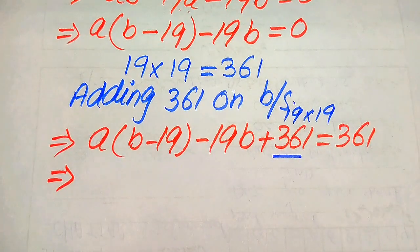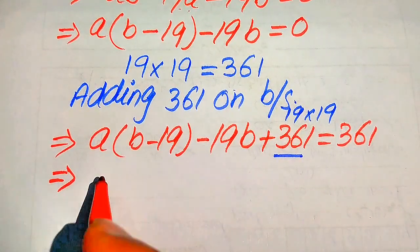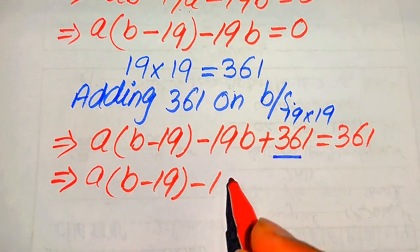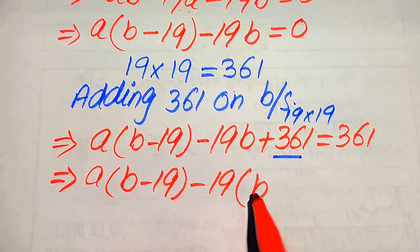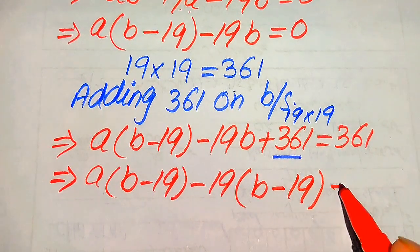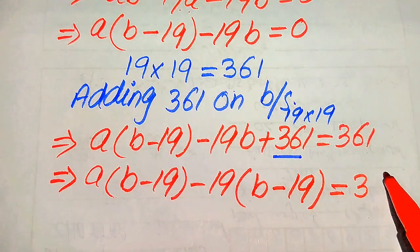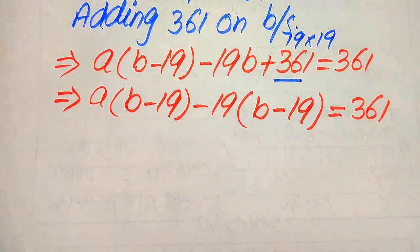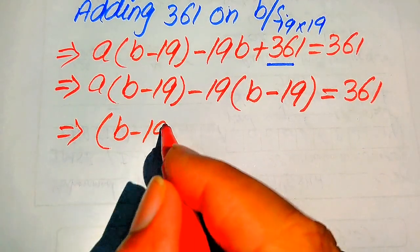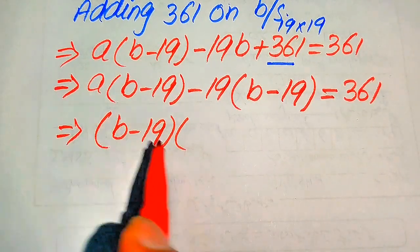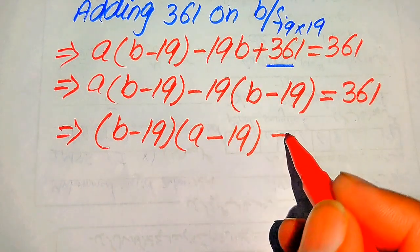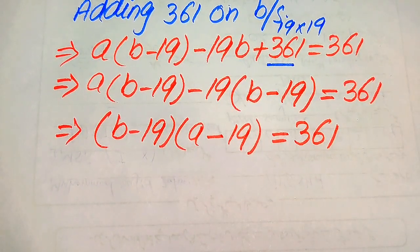Since 361 equals 19 times 19, when we take out minus 19 as a common factor from the last two terms, the positive signs become negative and we get minus 19 times (b minus 19). So the equation becomes a(b minus 19) minus 19(b minus 19) equals 361. Taking (b minus 19) as a common factor gives us (b minus 19)(a minus 19) equals 361.